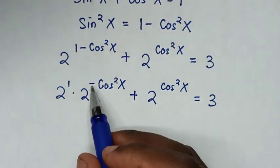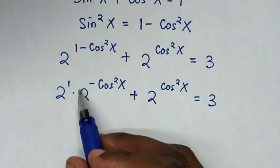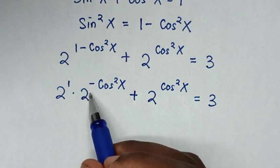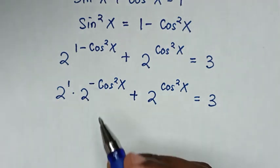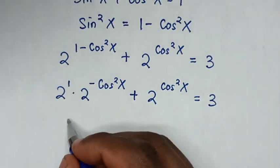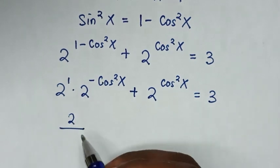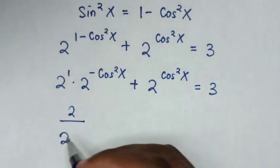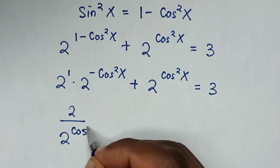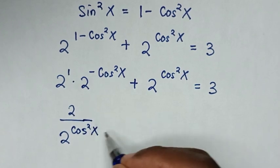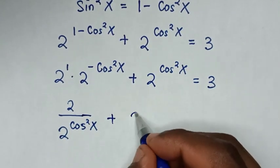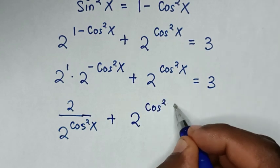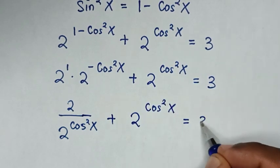A negative exponent means the term moves to the denominator when positive. So 2 to the power of 1 is 2, and 2 to the power of negative cos²x becomes 1 over 2 to the power of cos²x. The equation becomes: 2 over 2^(cos²x) plus 2^(cos²x) equals 3.